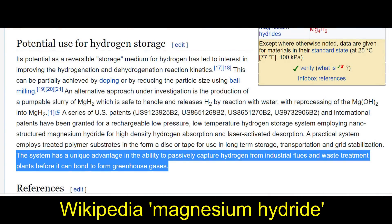Yeah, this is now actually something you can read on Wikipedia. The international patents have been granted for a rechargeable, low pressure, low temperature hydrogen storage system employing nano-structured magnesium hydride for high-density hydrogen absorption and laser-activated desorption. A practical system employs a treated polymer substrate. Yeah, no polymer is going to work at this sort of temperature in the form of a disc or tape for use in long-term storage transportation and grid stabilization. Yeah, none of that is true, but the last sentence is the one that really takes the biscuit. The system has the unique advantage of not obeying the laws of physics in its ability to passively capture hydrogen from industrial flus and waste treatment plants before it can bond to form greenhouse gases. That makes no sense. Greenhouse gases, what, like carbon dioxide? That, um, kind of notable in that they don't contain any hydrogen.